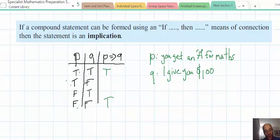Okay. What about the, going back to the second row, you get an A for maths, and I don't give you $100. What? Okay. Well, that's obviously abhorrent, that's a lie, and that would get a false. Fair enough.